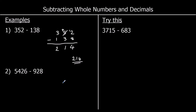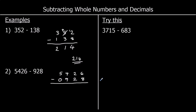In the second example, we've got 5,426 take away 928. So 5,426, and we're going to line up hundreds with hundreds, tens with tens, and ones with ones. 928 has got nothing in the thousands, so I can either add a zero or leave it blank. Now we're going to take away, starting with the smallest column, which is the ones.